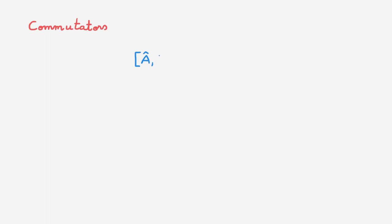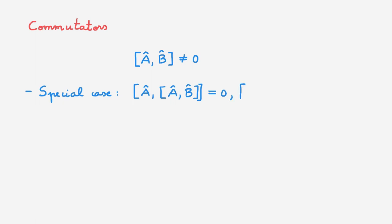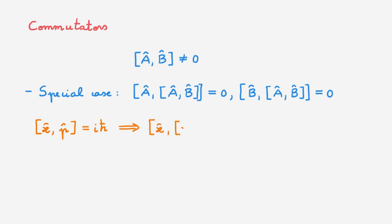For the third case, we consider the general situation when A and B don't commute. There is a very important special case: we limit ourselves to the situation when A commutes with the commutator of A and B, and B also commutes with the commutator of A and B. Even though A and B don't commute, they each commute with their commutator. This is precisely the case for the position and momentum operators — x and p don't commute, but their commutator is simply the scalar iℏ, so x and p each commute with [x, p]. Whatever we learn here immediately applies to position and momentum.